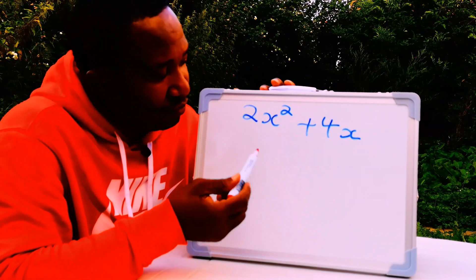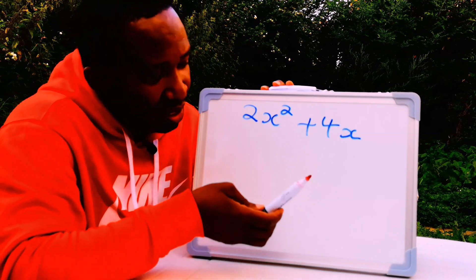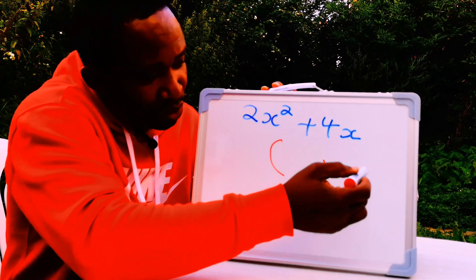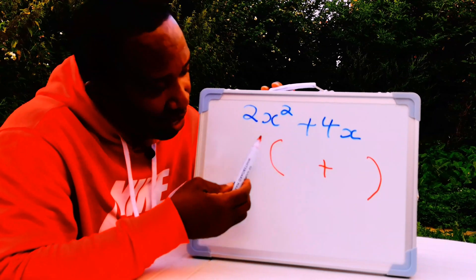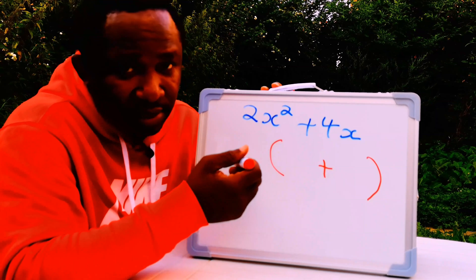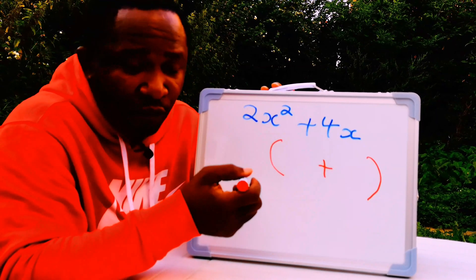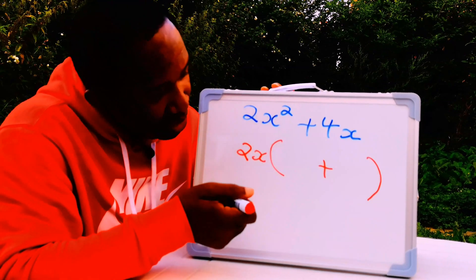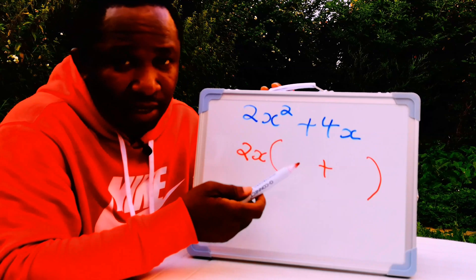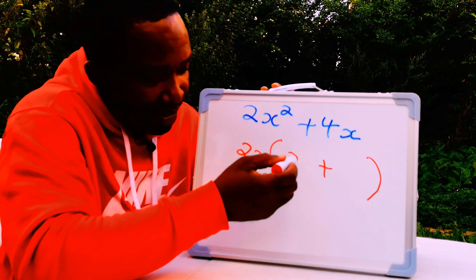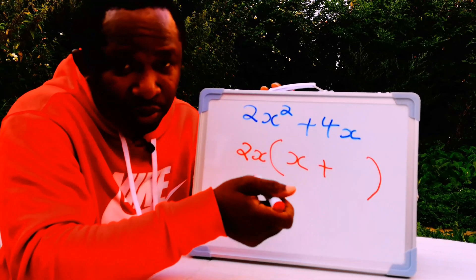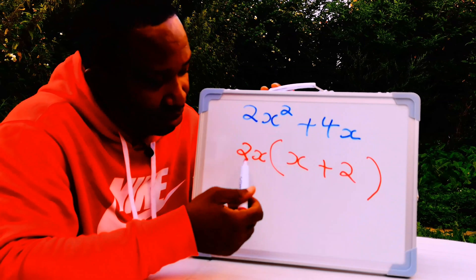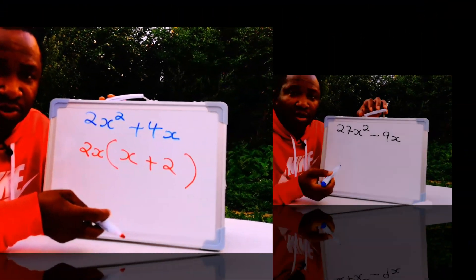Next we have 2x plus 4x. We open a bracket and return the operator. What is common on both sides? 2 is common in both 2x and 4x, and x is also common on both sides. So the common factor is 2x. 2x times 1 gives 2x, and 2x times 2 gives 4x. Hence 2x is the common factor.